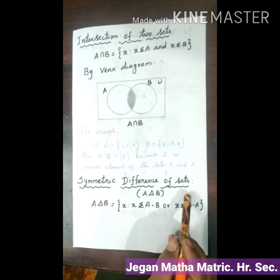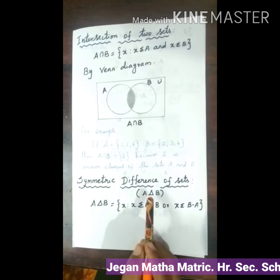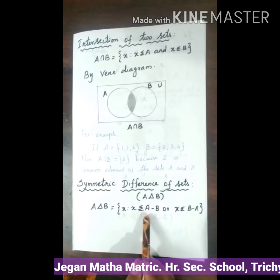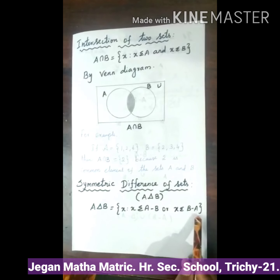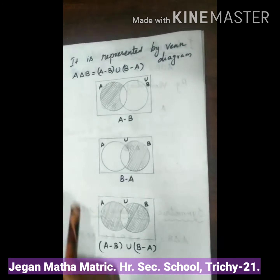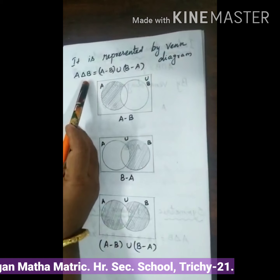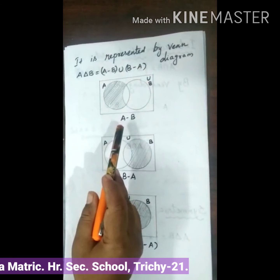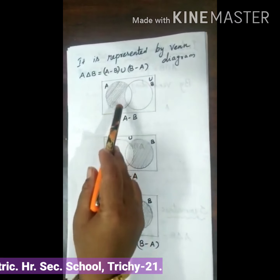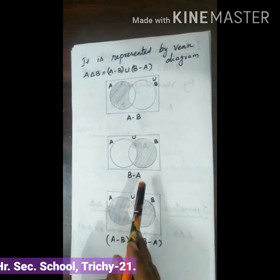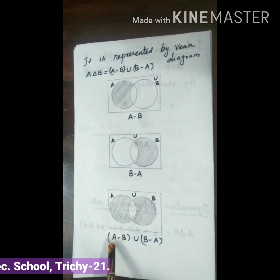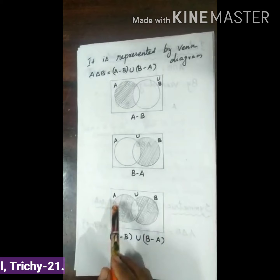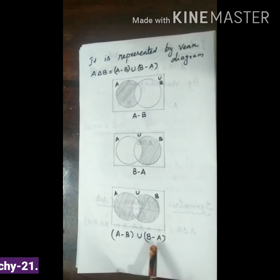Symmetric difference — A symmetric difference B is equal to the set of X such that X belongs to A difference B or X belongs to B difference A. It is represented by Venn Diagram. A symmetric difference B is equal to A difference B union B difference A. We combine A difference B and B difference A, and this combined shaded region is called A difference B union B difference A.